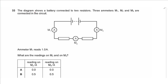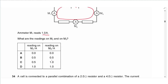Question 33: A battery is connected to two resistors with three ammeters M1, M2, and M3 in the circuit. Ammeter M1 reads 1 ampere. Since the circuit is entirely in series with no branches, all ammeters read the same current. M2 = 1 A and M3 = 1 A. Answer is D.